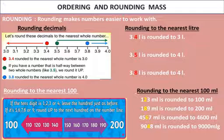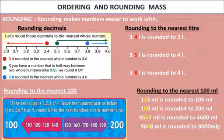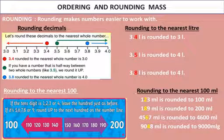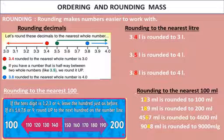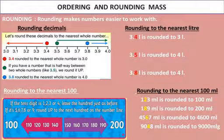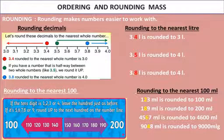For rounding to the nearest hundred: look at the tens place. If the tens place is less than 5, round down to the smaller hundred. If the tens place is 5 or more, round up to the next hundred. For example, 123 milliliter: the tens place is 2, which is less than 5, so it rounds to 100 ml.